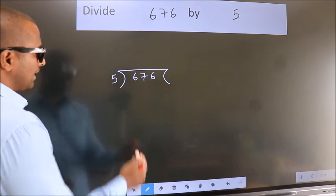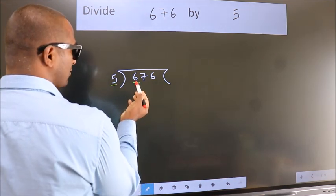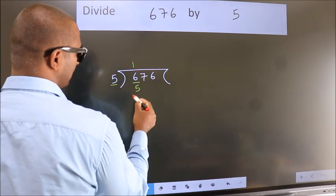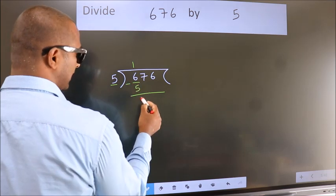Next, here we have 6, here 5. A number close to 6 in the 5 table is 5 once 5. Now we should subtract. We get 1.